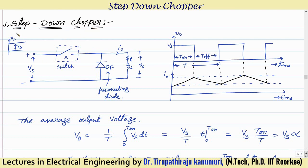Let us take an example. I am taking a DC input voltage. This input voltage, in order to decrease the average value at the output or the load — let us assume the load is an RL load — the output voltage can be varied by cutting this input voltage at some instant. There is a switch for doing this purpose.